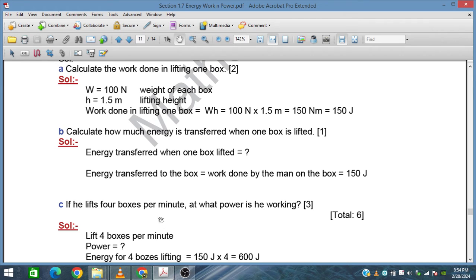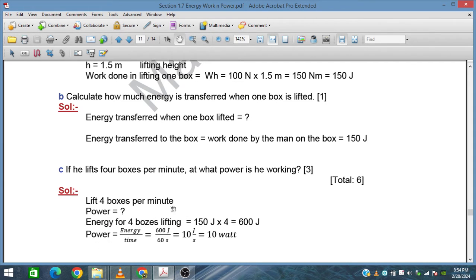If he lifts four boxes per minute, at what power is he working? Four boxes per minute means 150 joules × 4 = 600 joules total energy, and the time is 60 seconds, so the power is 10 watts.